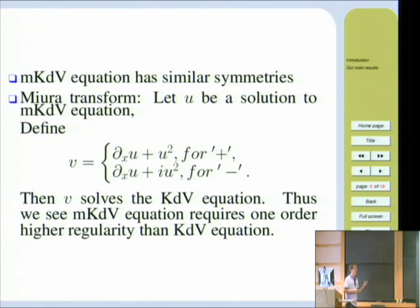For the mKdV equation, there are also similar symmetries. But there is also a connection between the KdV equation and the mKdV equation. That is the Miura transform. If u is a solution to the mKdV equation, then after defining v as follows, then v solves the KdV equation.